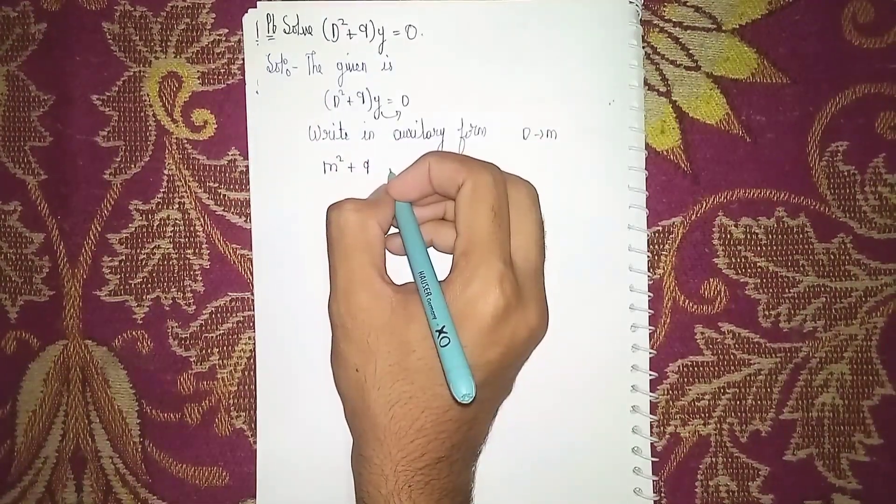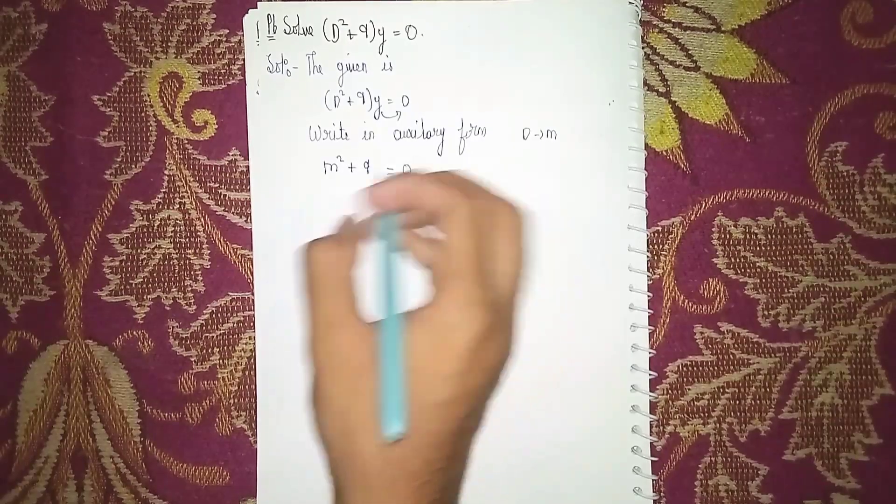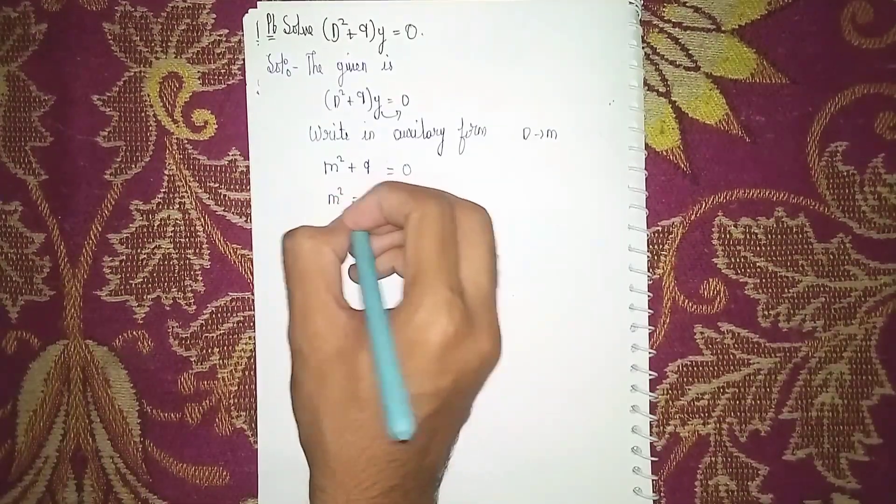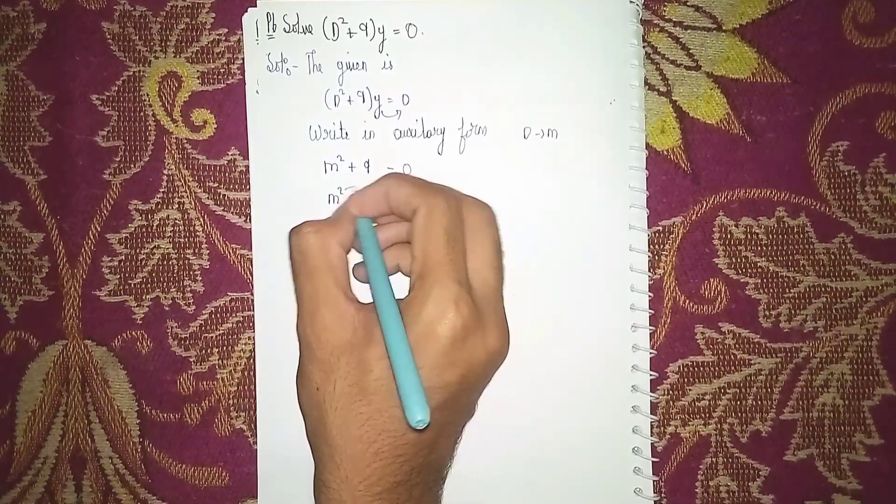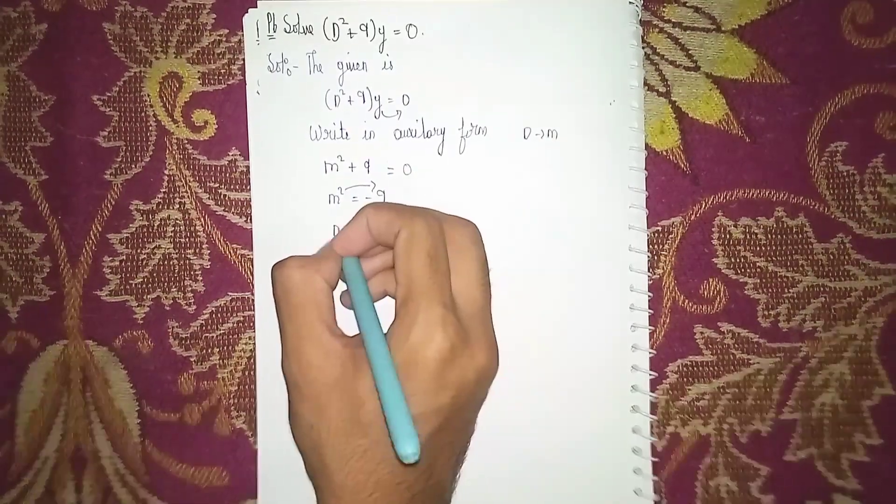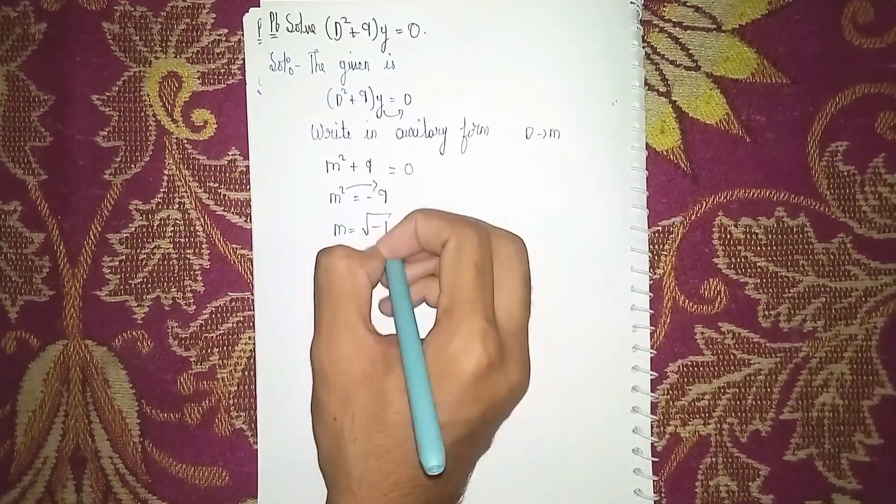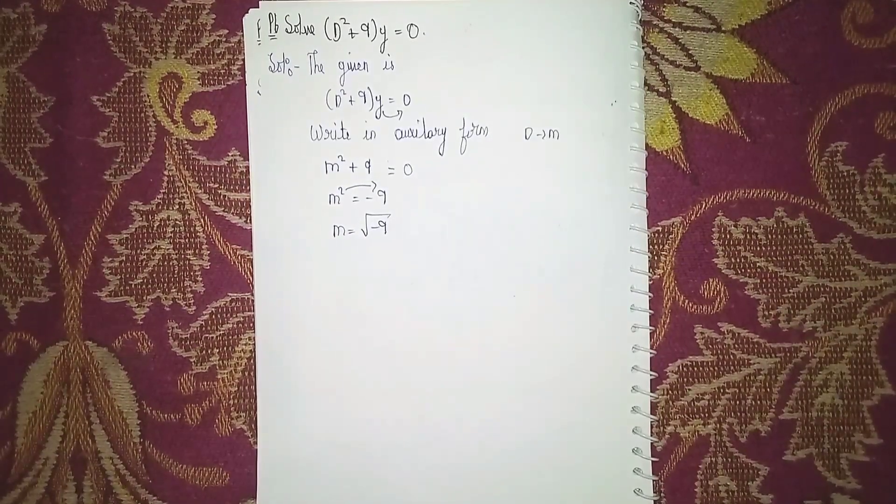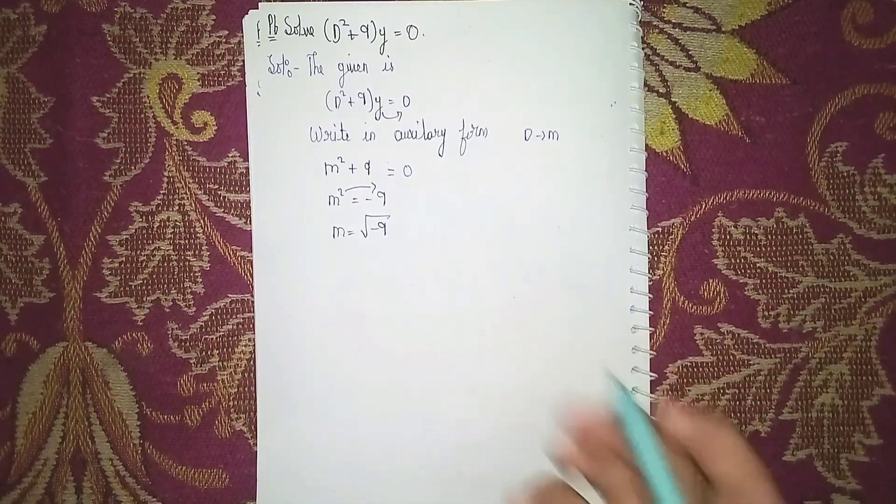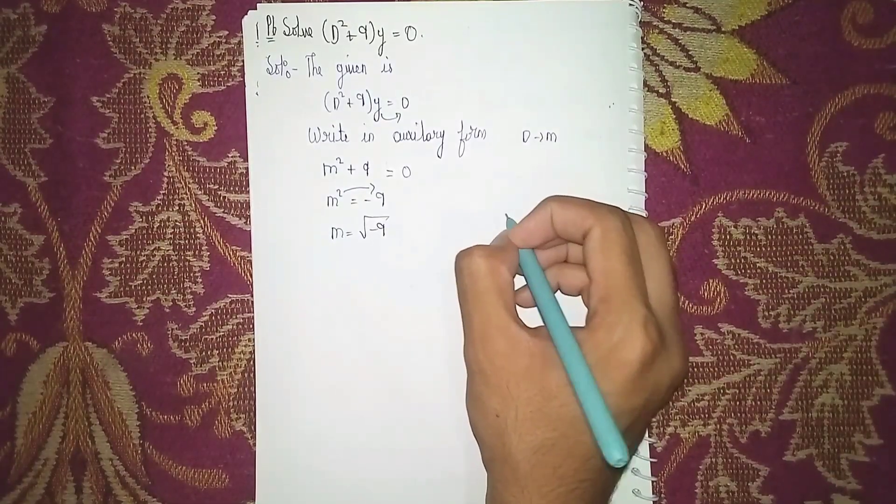Send this plus 9 to the other side: m² = -9. Sending this square to the other side becomes m = √(-9). If we are removing the root, we have the root value of 9, but for minus 9 we need to take i.